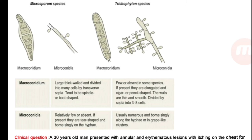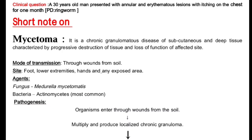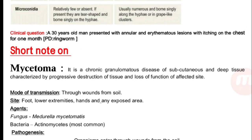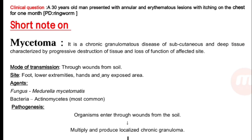Clinical question: A 30-year-old man presented with annular erythematous lesions with itching on the chest for one month. That is ringworm. Provisional diagnosis: tinea corporis.